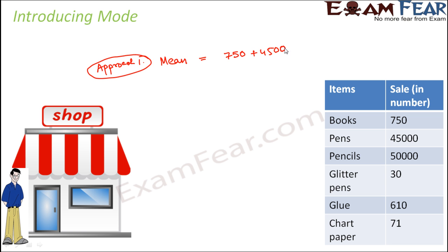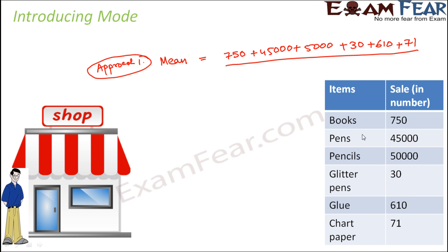So finding the mean: 750 plus 45,000 plus 50,000 plus 30 plus 610 plus 71, divided by 6 items. This value comes out to be approximately 16,076.